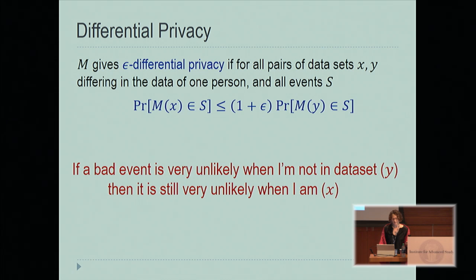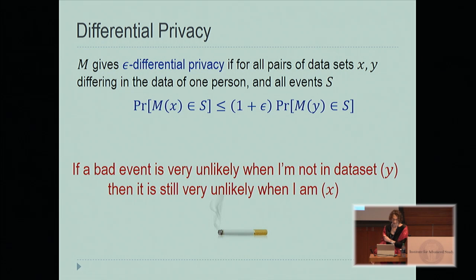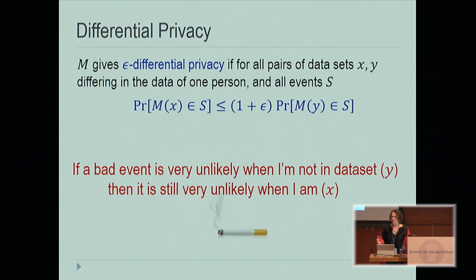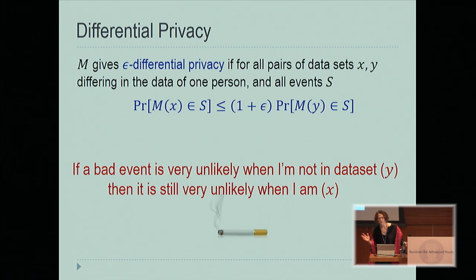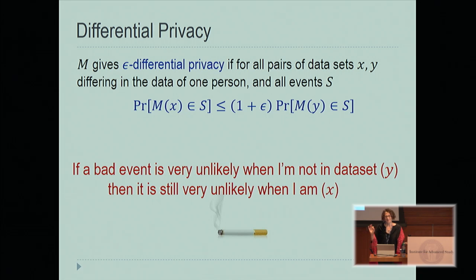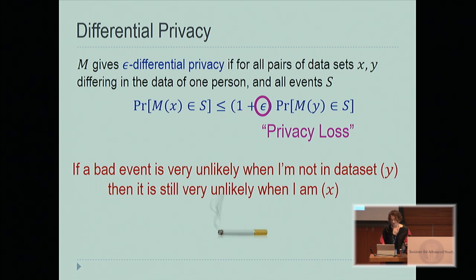The key point is that if a bad event is very unlikely when I'm not in the data set, then it will still be very unlikely when I am in the data set. For example, if I'm going to be identified as a member of a genome-wide association study case group when I can't be identified as such when I'm not actually in the study, then if I am in the study, I will still have very unlikely — in fact, zero — probability of being identified as a member of the case group. So epsilon is our measure of privacy loss. There are some properties of differentially private algorithms that flow directly from the definition, independent of the actual implementation.